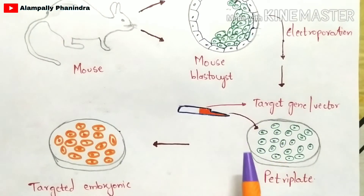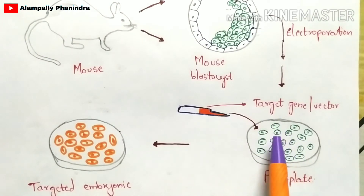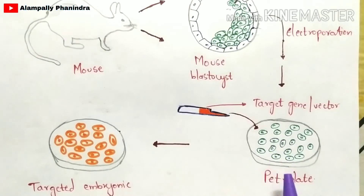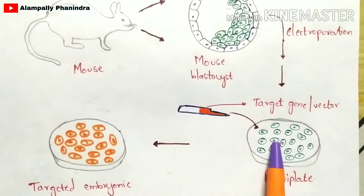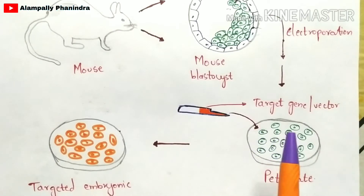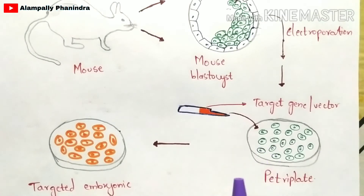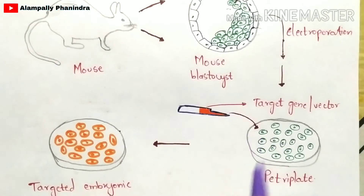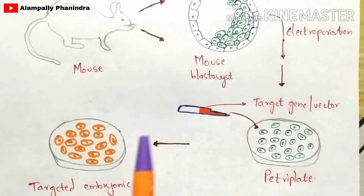In the next step, you inject a target gene or a target vector into this petri plate containing the embryonic stem cells of the mouse. These embryonic stem cells will then develop into a pure population of targeted embryonic stem cells.